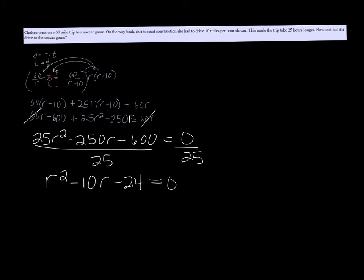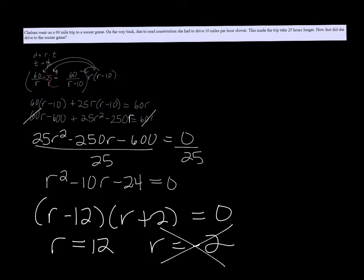That factors nicely to r minus 12 and r plus 2. So we get two answers: r equals 12 and r equals negative 2, but negative speeds don't make sense in this scenario. So we get that the rate was 12 miles per hour.